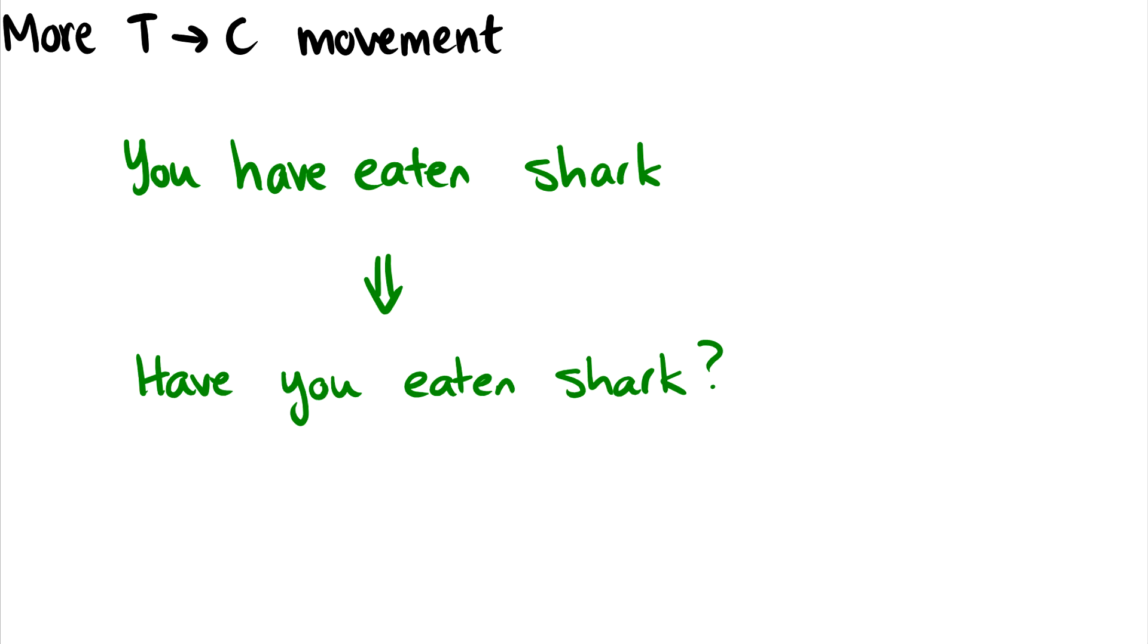Does this seem pretty straightforward? Well, it can get a little more complicated. Now, 'you have eaten shark.' What do we see? Well, we see the perfect that we've seen last. So we have some morphology there on 'eaten.' We have 'have' here.